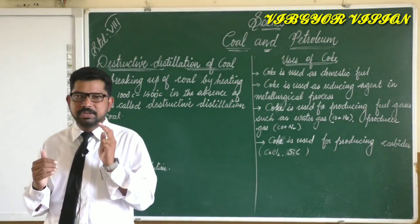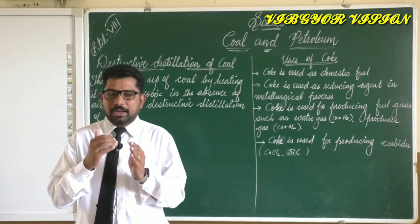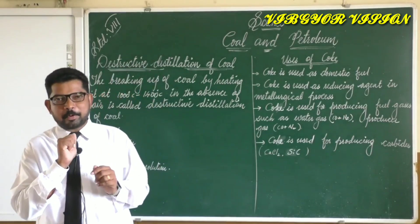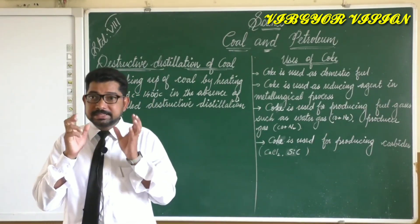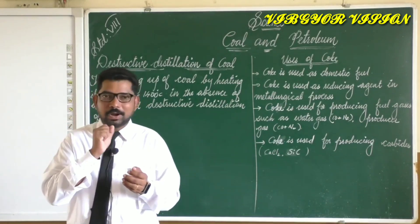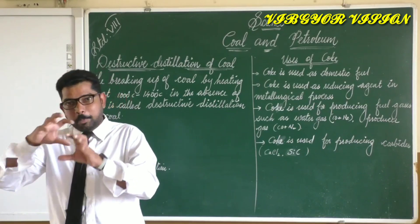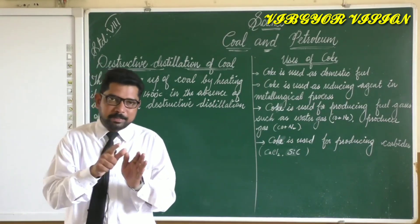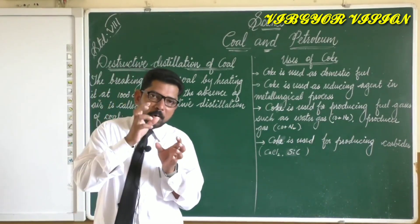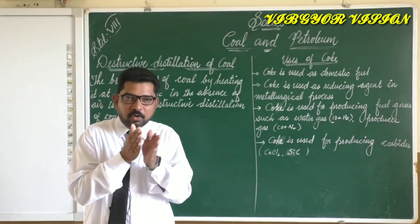Coal tar is not a single compound — it contains nearly 200 compounds. Since coal tar is a mixture, if we want to separate its different components, we undergo fractional distillation. We can separate the different components of coal tar by the process of fractional distillation.